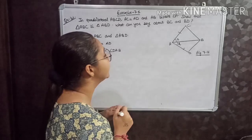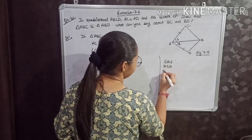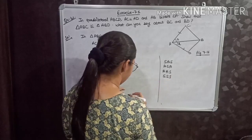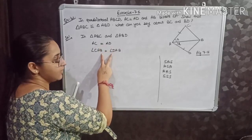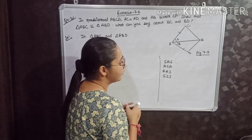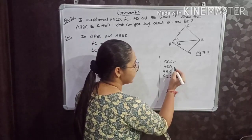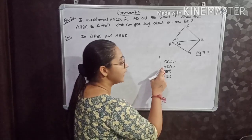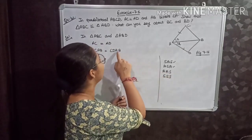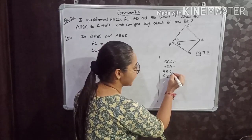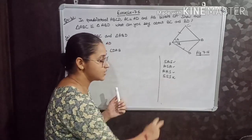See very carefully — you have four rules: SAS, ASA, AAS, and SSS. Given is one side and one angle. I can apply SAS if I have one more side equal, or ASA/AAS if I have one more angle equal. I cannot apply SSS because that requires all three sides to be equal.